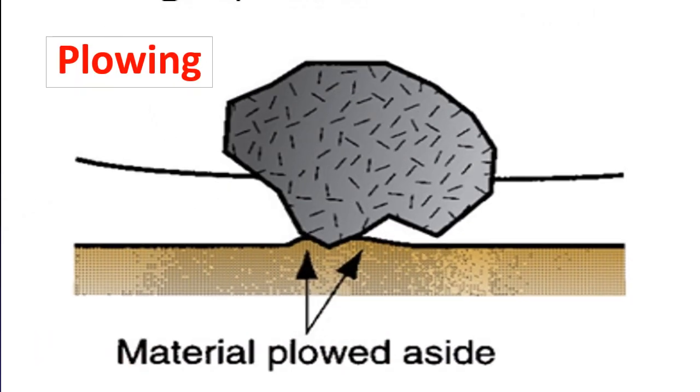Second is plowing, where the grit projects into the work but not far enough to cut. In that case, the surface is deformed and energy is consumed, but no material is removed.